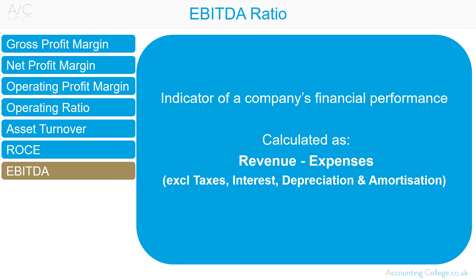Earnings before interest, taxes, depreciation and amortisation (EBITDA) is an indicator of a company's financial performance. It is calculated as revenue less expenses, excluding taxes, interest, depreciation and amortisation. It is essentially net income with interest, taxes, depreciation and amortisation added back to it. EBITDA is used to analyse and compare profitability between companies and industries because it eliminates the effects of financing and accounting decisions. The idea is that taxes and interest are externally influenced and therefore not relevant to the underlying performance of the organisation. Depreciation and amortisation represent a write-off of expenditure over a number of years and are therefore not relevant to the underlying performance of the organisation.